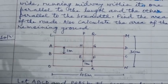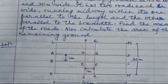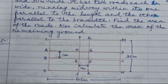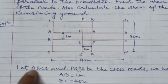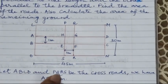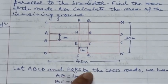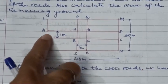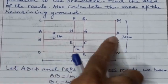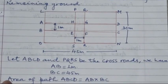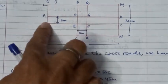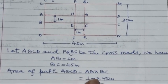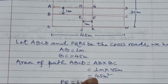Just as we discussed in the previous question, let ABCD and PQRS be the crossroads. We have AB equal to 1 meter and BC equal to 45 meters. The area of path ABCD equals AB into BC, which is 1 meter into 45 meters, giving us 45 meter square.